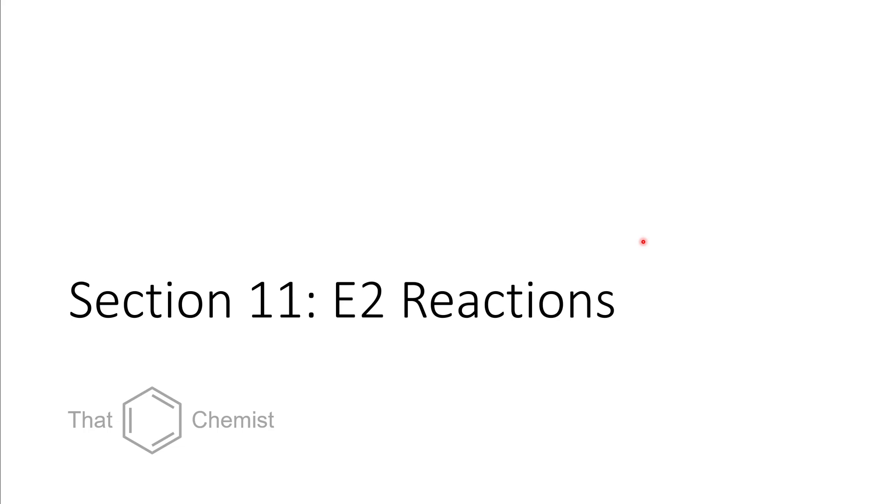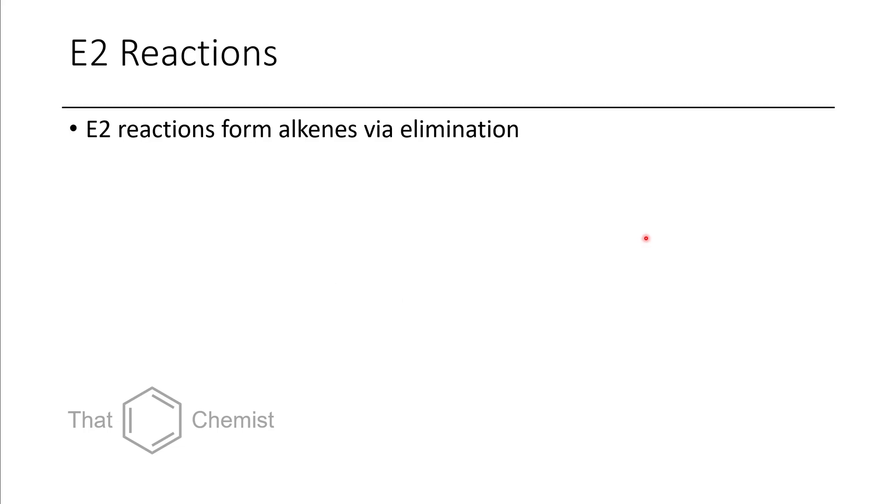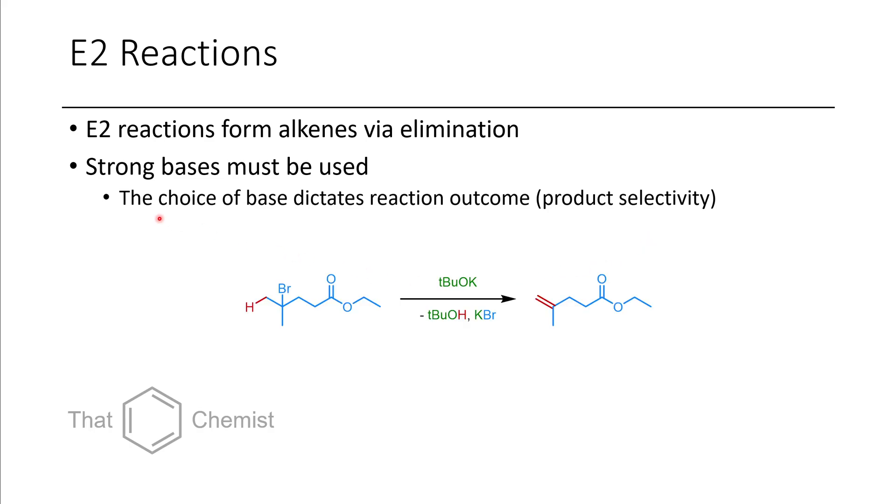Now let's talk about today's material, E2 reactions. An E2 reaction is when you have a direct elimination of a leaving group by a base. So you have to usually use a strong base unless you have a very acidic proton. And I'll show you a couple examples where you can do an elimination with a weak base in a minute.